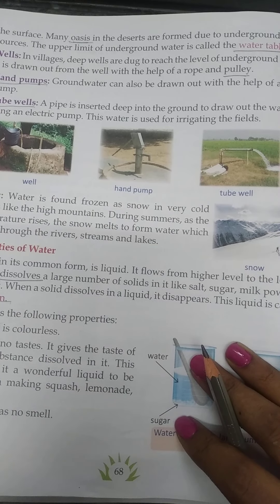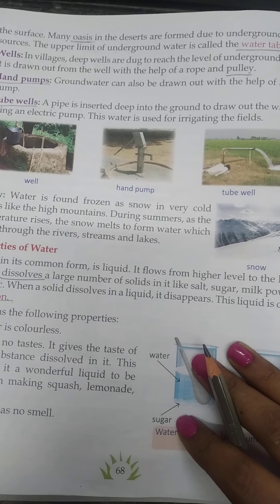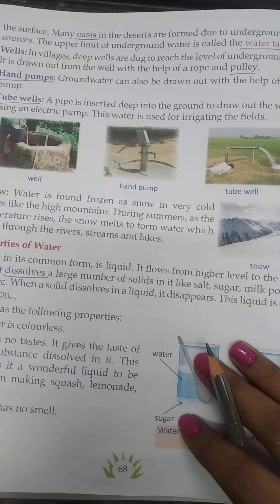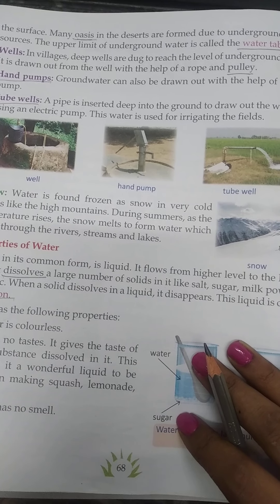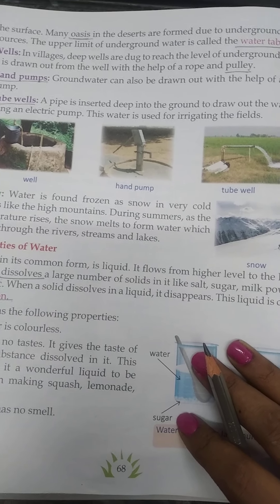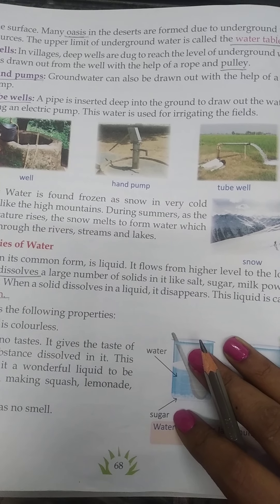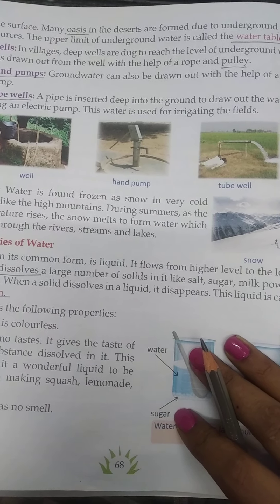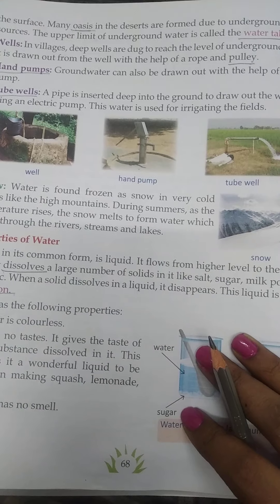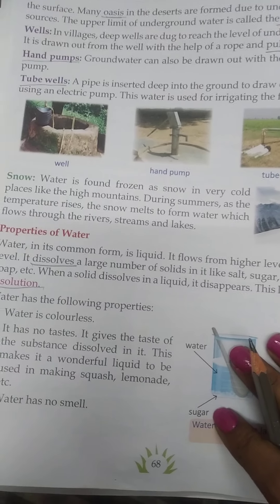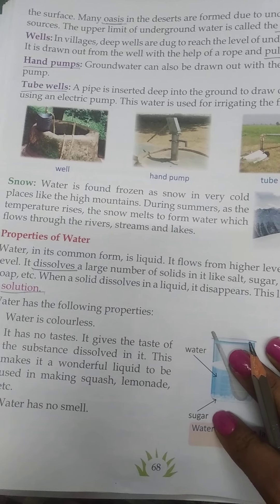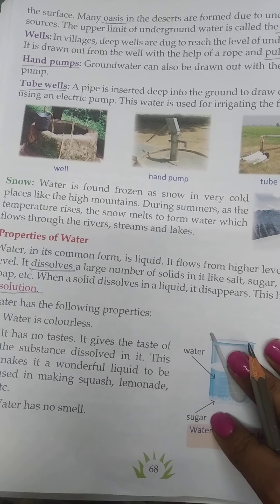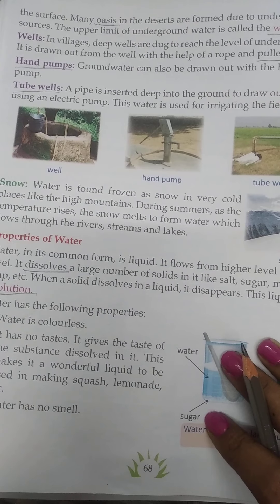The upper limit of underground water is called the water table. From the water table we draw out water through wells, hand pumps, and tube wells.